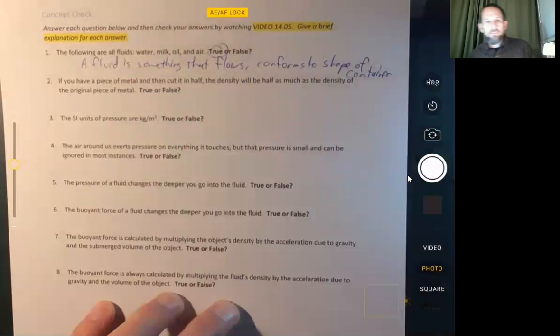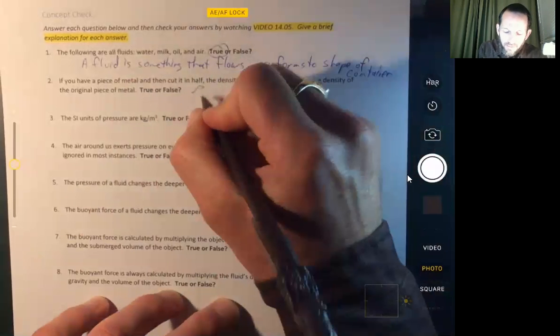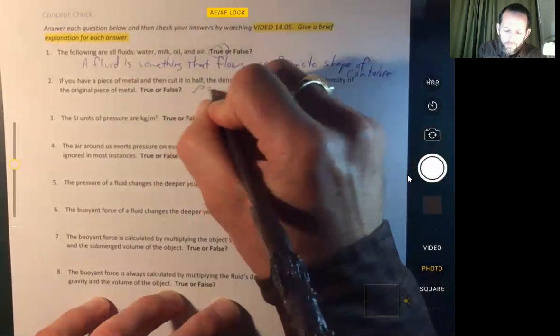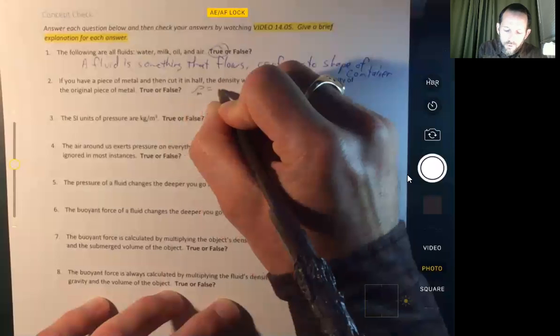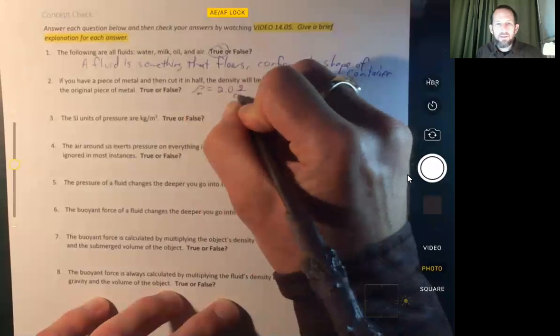If you cut a piece of metal in half, the density will be half as much as the original piece of the metal, true or false. Well, let's look into that a little bit more. Let's say we had a density of some metal and it was two grams per cubic centimeter. That's not very dense at all.